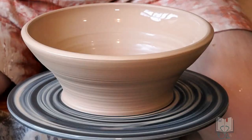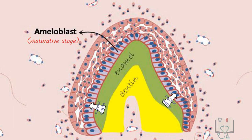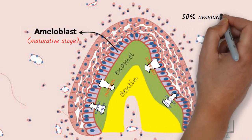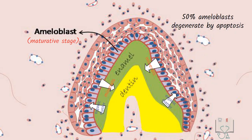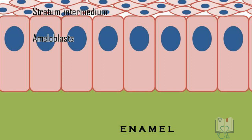Maturative stage: Once the whole thickness of enamel is formed, ameloblasts enter the maturative stage. Two processes take place: first, the organic matter is reabsorbed from the enamel; second, minerals are released into it — hence, maturation of enamel occurs. About 50% of ameloblasts undergo degeneration by apoptosis. In the ameloblasts, tomes processes disappear. The cells reduce in size but are still tall columnar. They resecreted the basement membrane between them and the enamel.